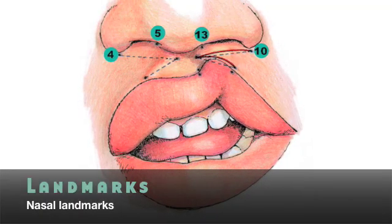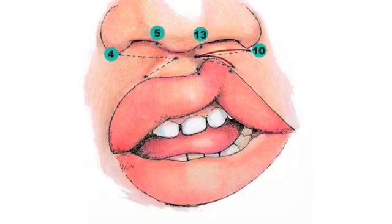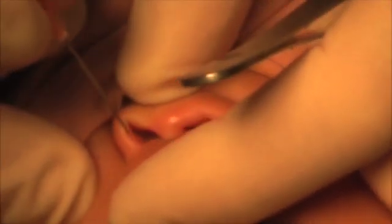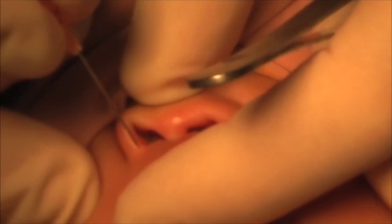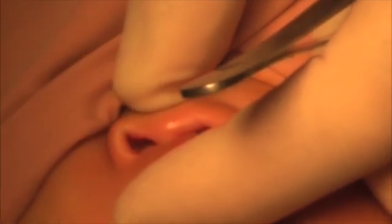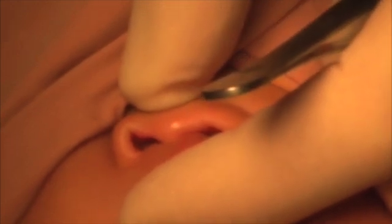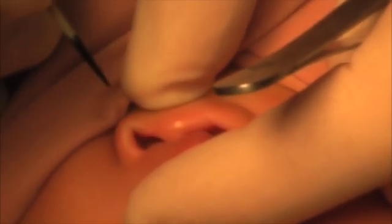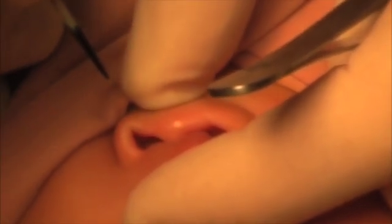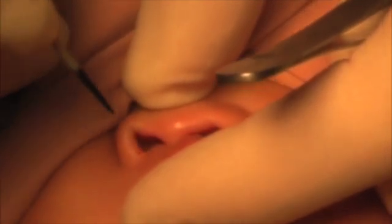Mark the alar bases as landmarks 4 and 10. Those landmarks are found as the end of the light reflection on the nostrils. More important is that both landmarks are in a comparable position, right to left, otherwise your measurements are meaningless.